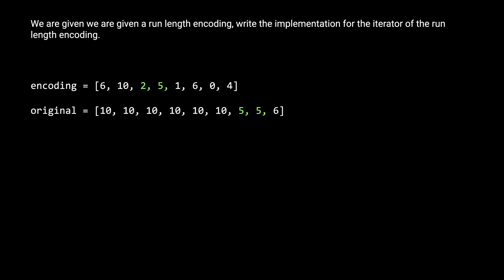For the second pair of numbers, the 2 and the 5, this represents two 5s in the original sequence. Next, we have 1 and 6, so you can see that there is one 6 in the original. And finally, it is possible that we can get a 0 — like here, we have a frequency of 0 for the value of 4. In the original encoding, this just means that it doesn't show up at all.